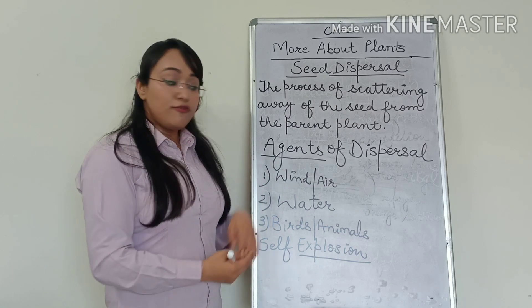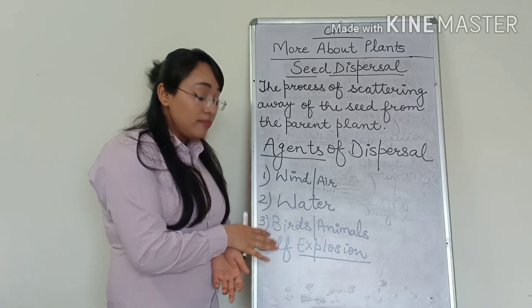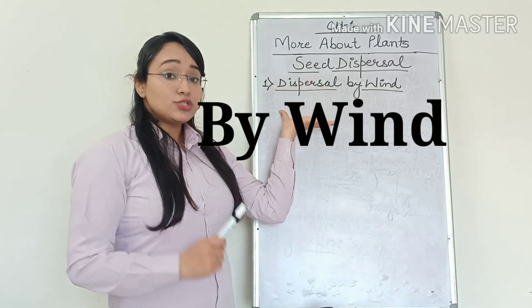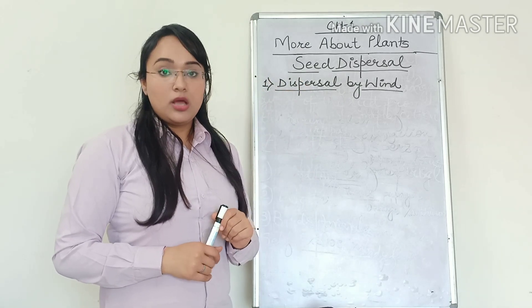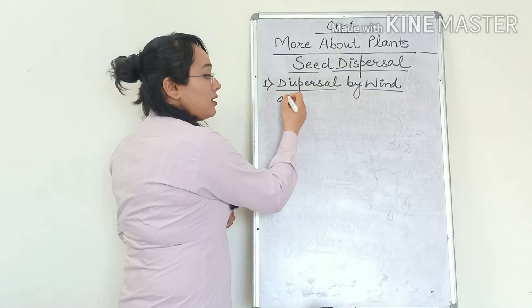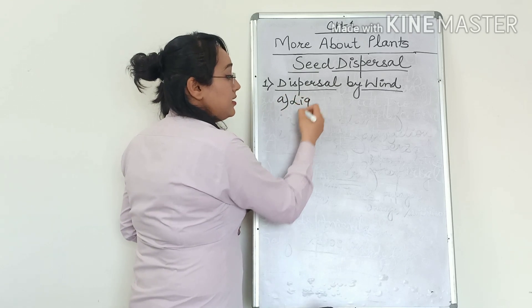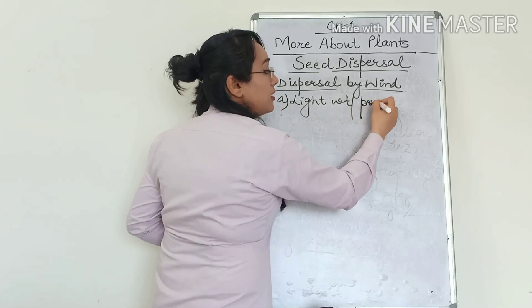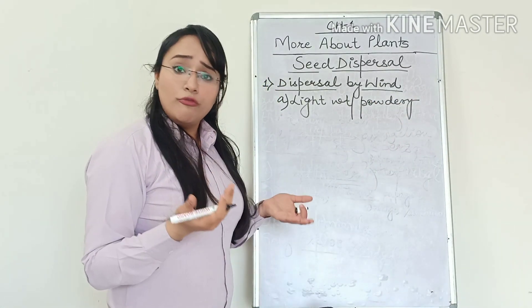Now we are going to discuss one by one, through examples, the plants or seeds that are carried away by these agents. The first agent of dispersal is wind. For the wind to disperse the seed, what are the necessary adaptations by the plant? First, the seed should be very light in weight — it should be light in weight or in the form of powder, powdery. Only then can the seeds be blown away by the wind.